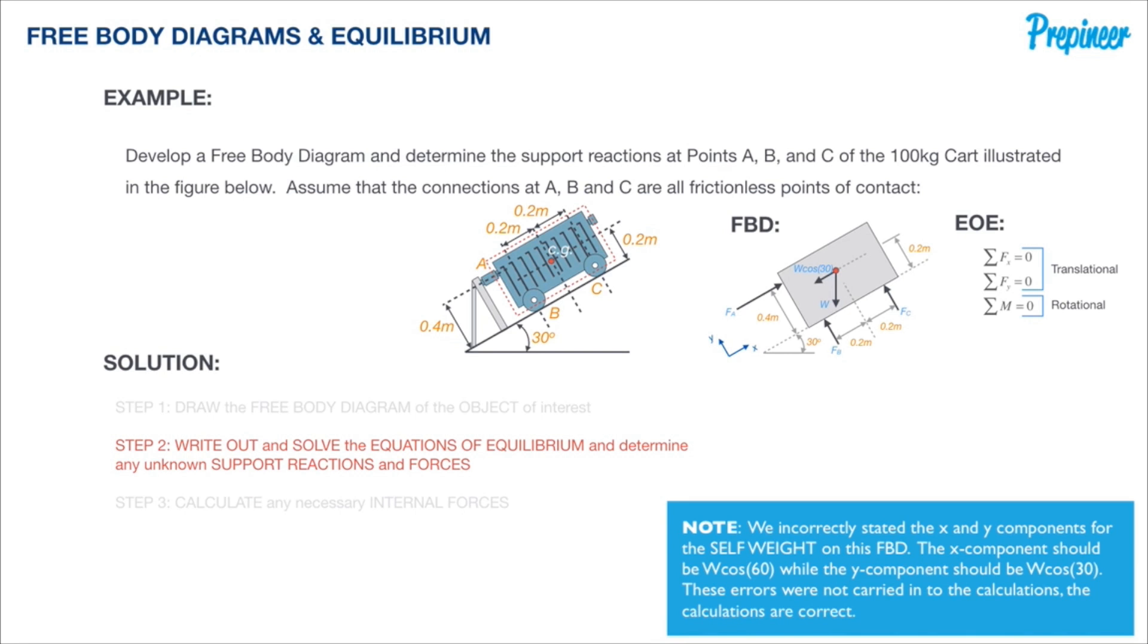Before we begin our calculations, let's determine the X-Y components of self-weight. The X component will run along the rotated X axis and will be equal to W sine 30, and the Y component will be W cosine 60. For simplification, we can remove the original self-weight vector and clean up that diagram.